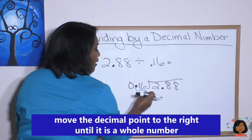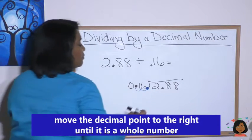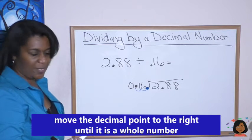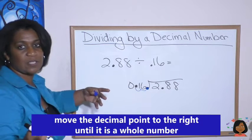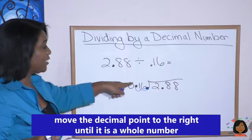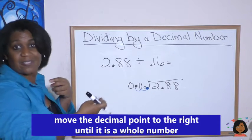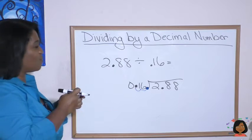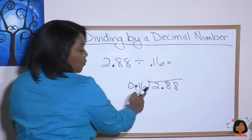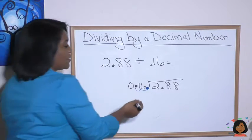And by the way, it's not always just two places. It's whatever it takes to move it to get rid of that decimal. So if my number was 0.163, I'd be moving it three places to the right. Just wanted to point that out. And we're moving it two places here. So we've got to move it two places there.